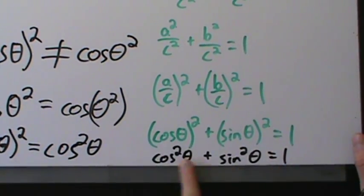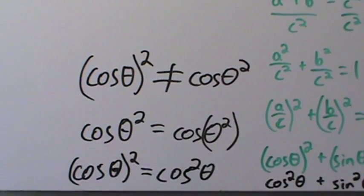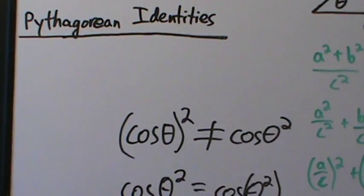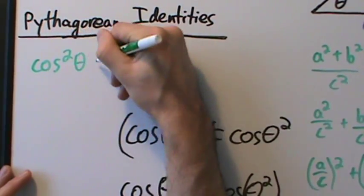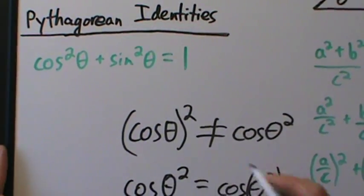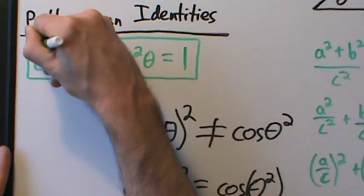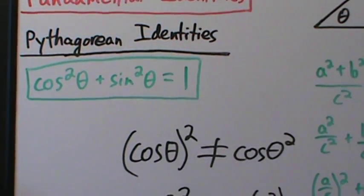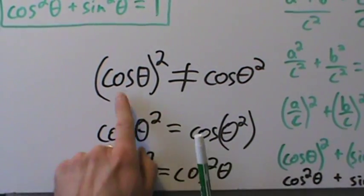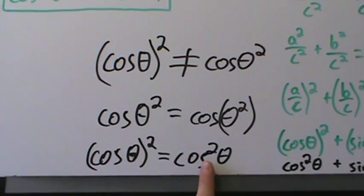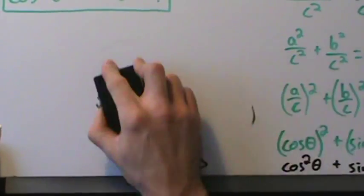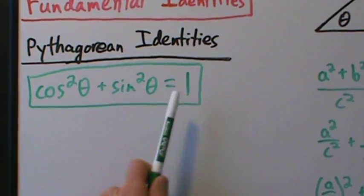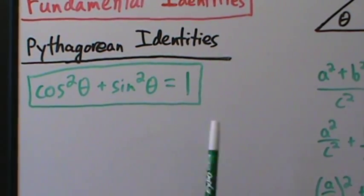So cos²θ + sin²θ = 1, and this is our first Pythagorean identity. This is probably one of the most important identities in all of math — if you only remember one thing from trig for the rest of your life, it really ought to be this identity. Just remember: be very careful with the notation; use cos²θ (not cos(θ²)) because they are not the same thing.